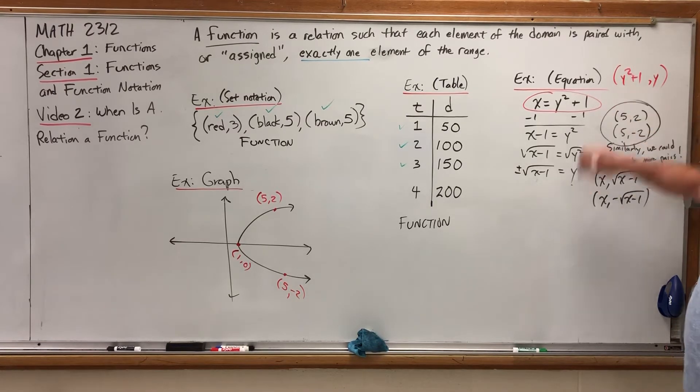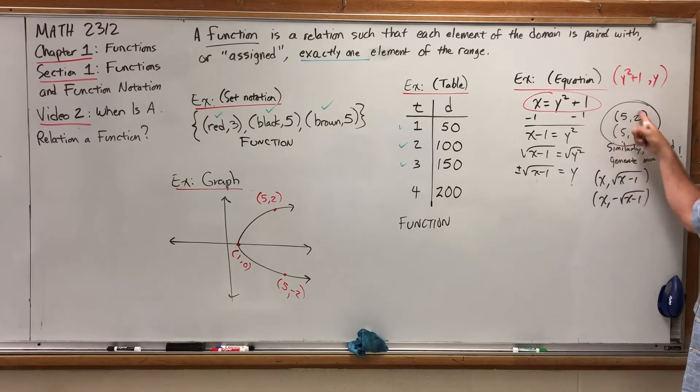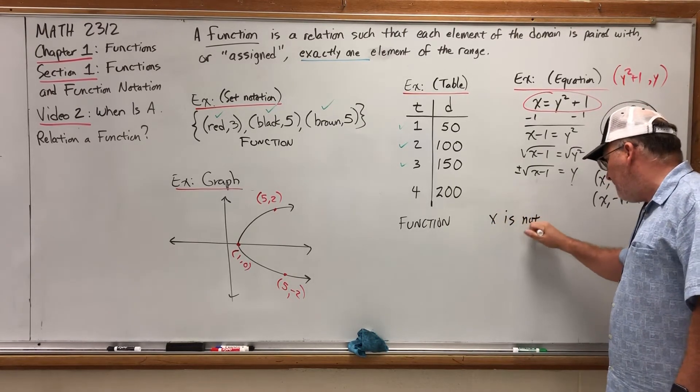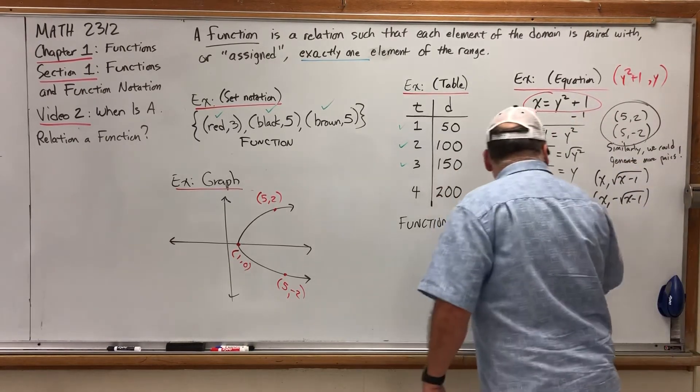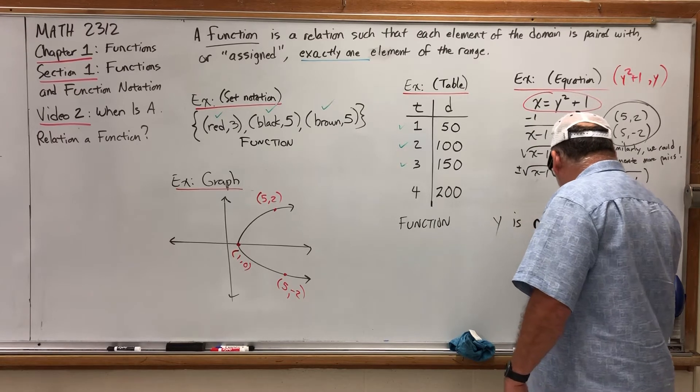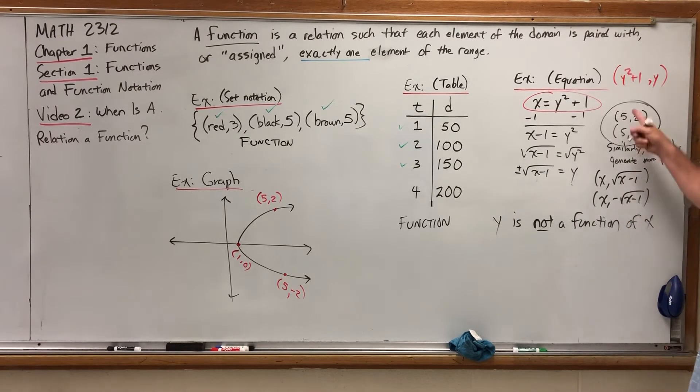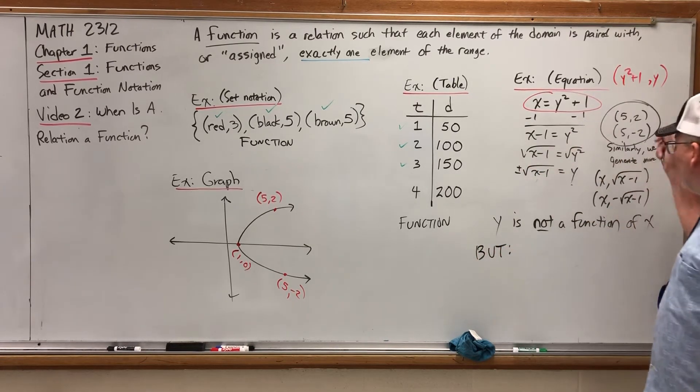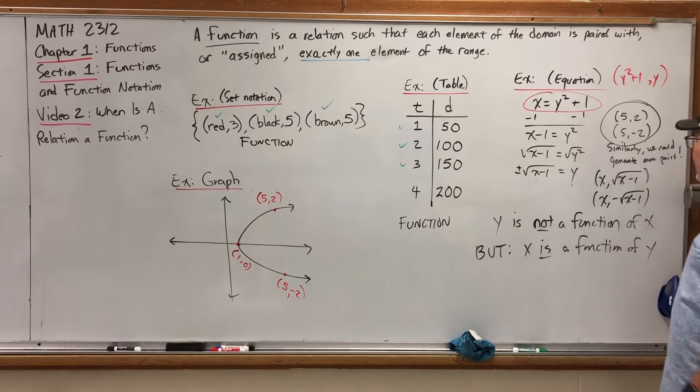Traditionally, when you talk about domains and range, you just assume X is from the domain and Y is from the range. If that were the case, then we would have a problem right here. We've already got evidence that this equation is not a function because we have a value from the domain that's paired up with more than one value from the range. However, we could just say that Y is not a function of X. Meaning that if we picked an X value, like 5, we could get more than one Y value.